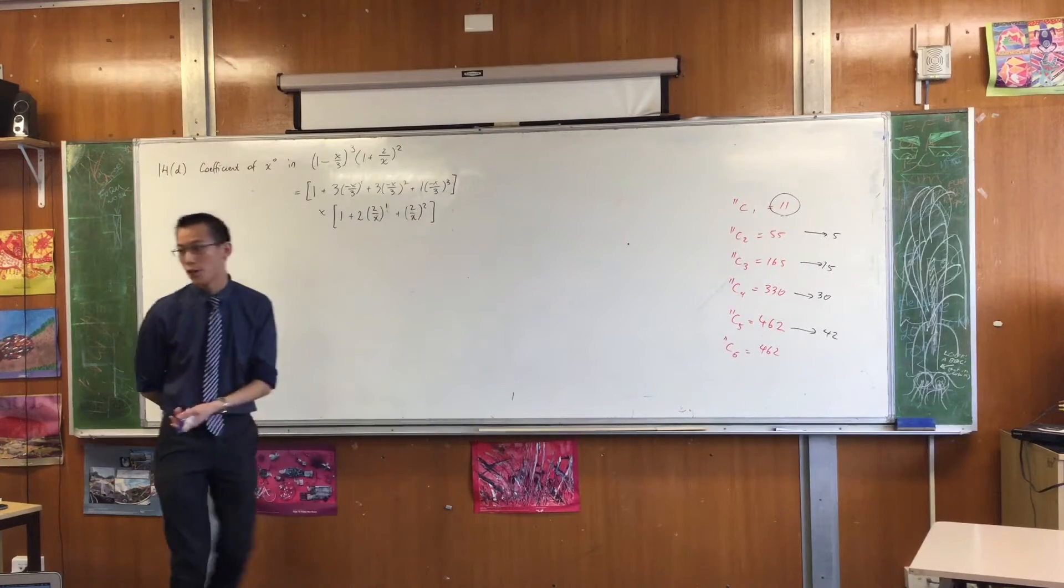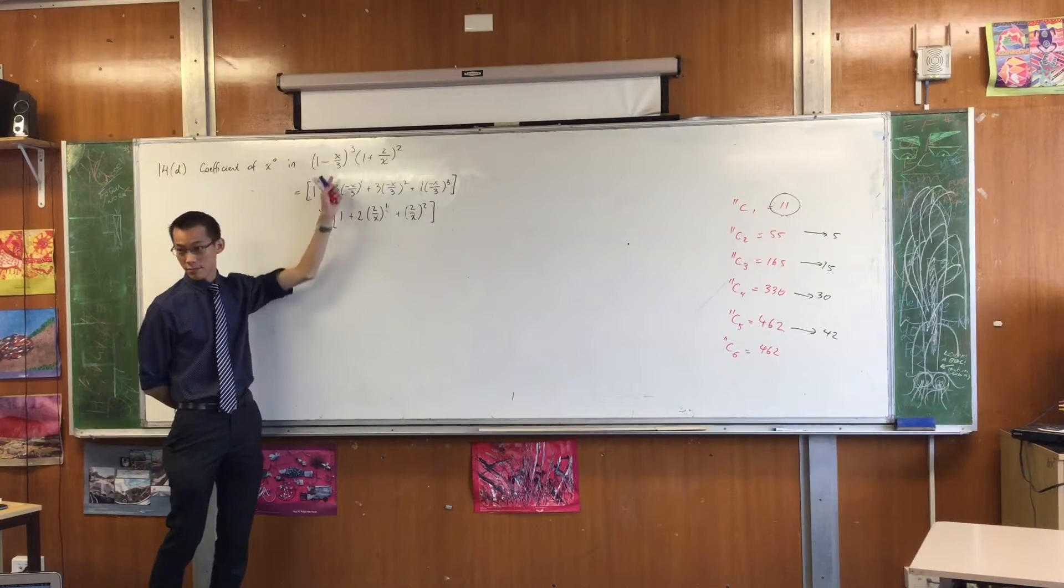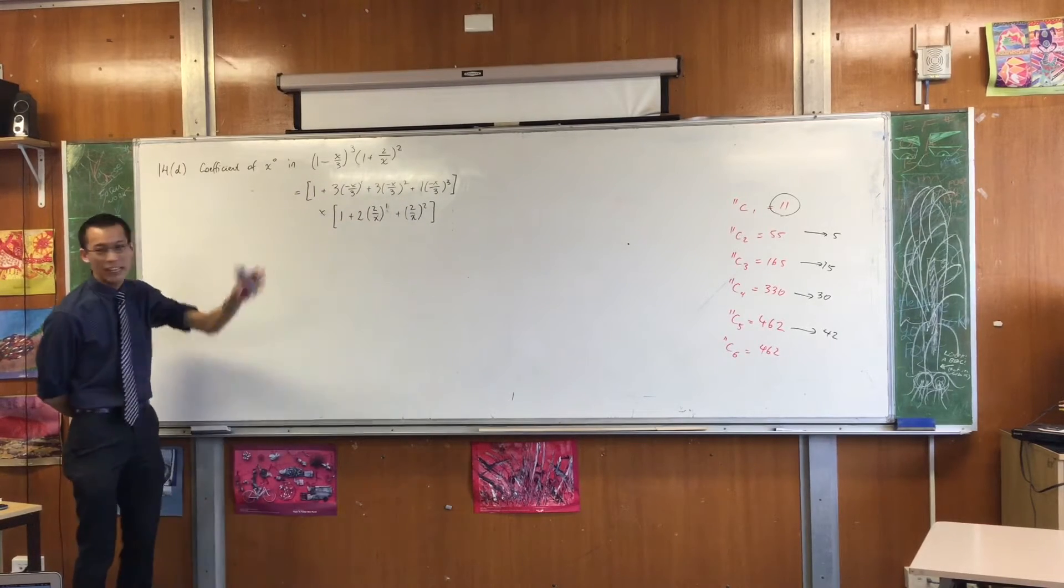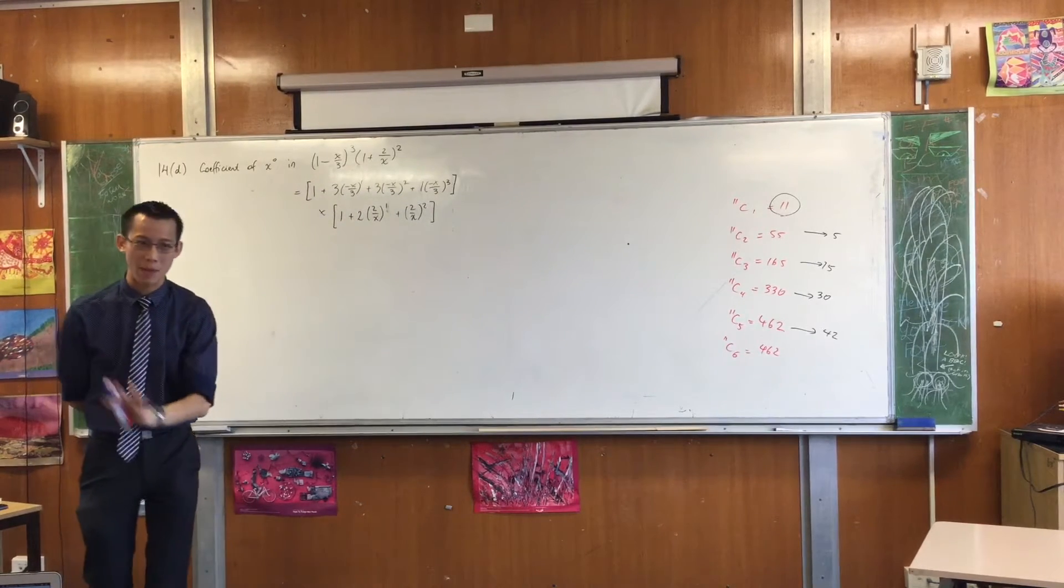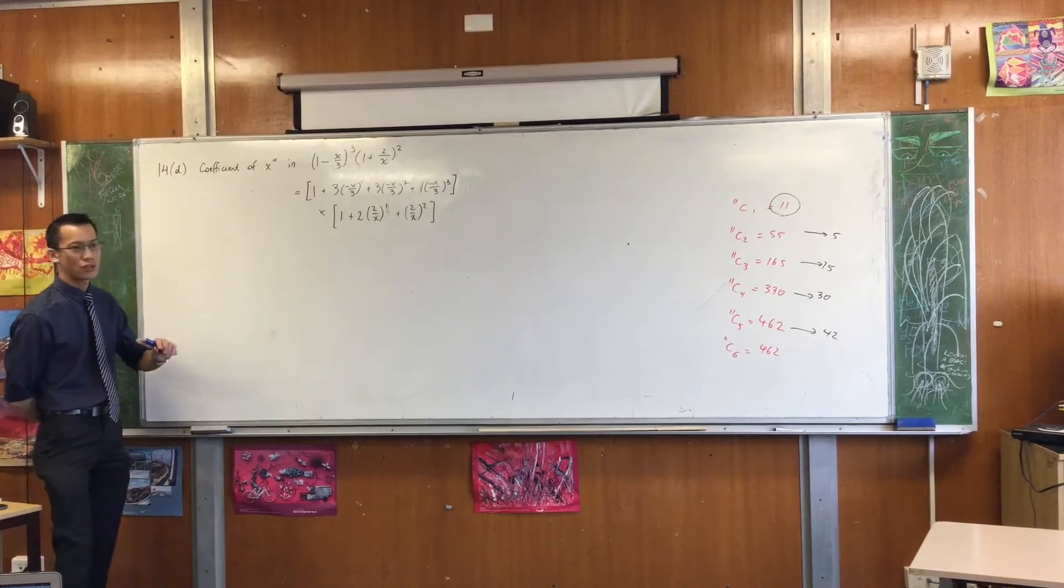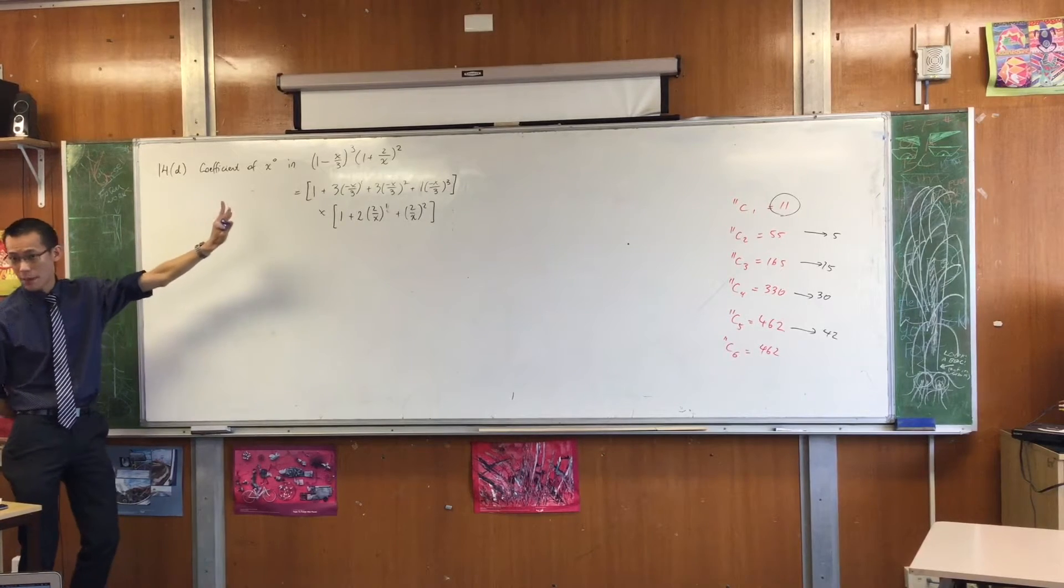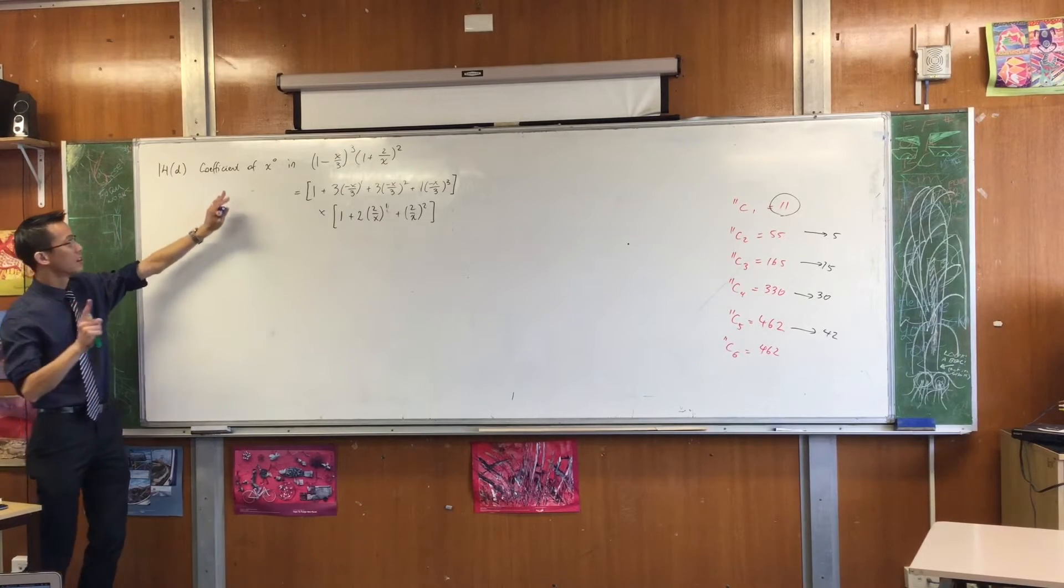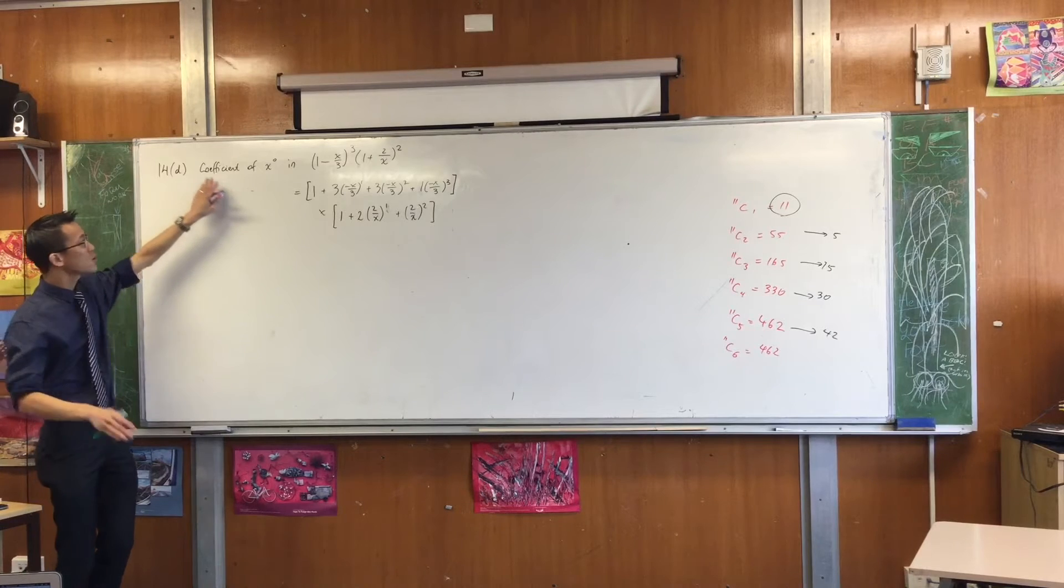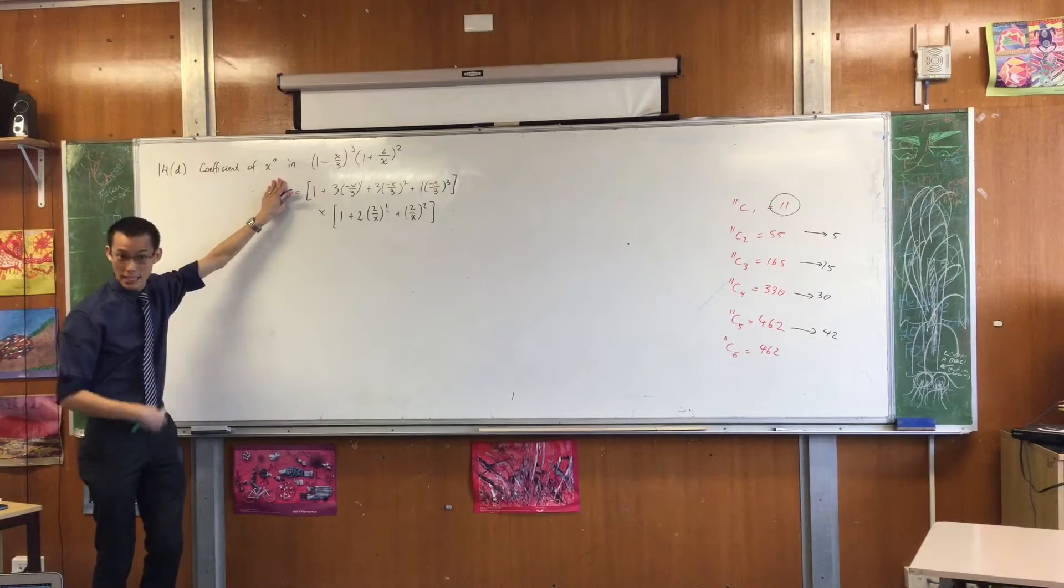Let me set up the question for you first. I've written it down. They give you this monstrous looking thing, and then they say, okay look, I don't want the whole expansion. Which is kind of the point behind the question. They're not looking for the whole expansion. They only want—they don't even want a term. They just want the coefficient of a particular term in the expansion.